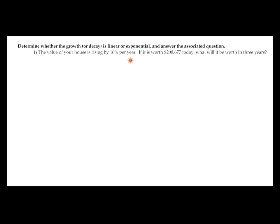Problem 1: the value of your house is rising by 60% per year. If it is worth $200,677 today, what will it be worth in three years? Because the quantity — the value of the house — increases per year by the same percentage of 16%, we know that this is not linear, and it is exponential. This type of growth is exponential growth.